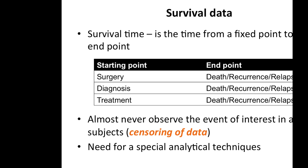Survival times are the time from a fixed start point to a fixed endpoint. Examples include time from surgery to death or recurrence, from diagnosis to death or recurrence, and from time of treatment to death or relapse. Which survival time is most informative depends on the researcher, biostatistician, and clinicians. For prostate cancer, biochemical recurrence — when PSA rises — is used as a surrogate of disease recurrence and is the commonly used survival time.